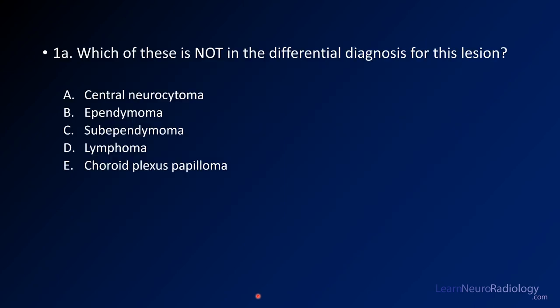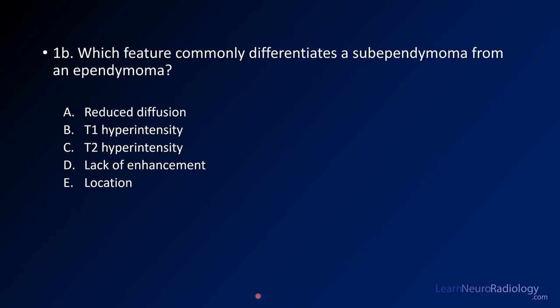Your first question is: which of these is not in the differential diagnosis? I'm giving you some tumors and you might think about which one you don't think this would be. Your second question is about differentiating a sub-ependymoma from an ependymoma — what feature might one have that the other lacks? Is it a variant in diffusion, T1 bright, T2 bright, lack of enhancement, or the location?